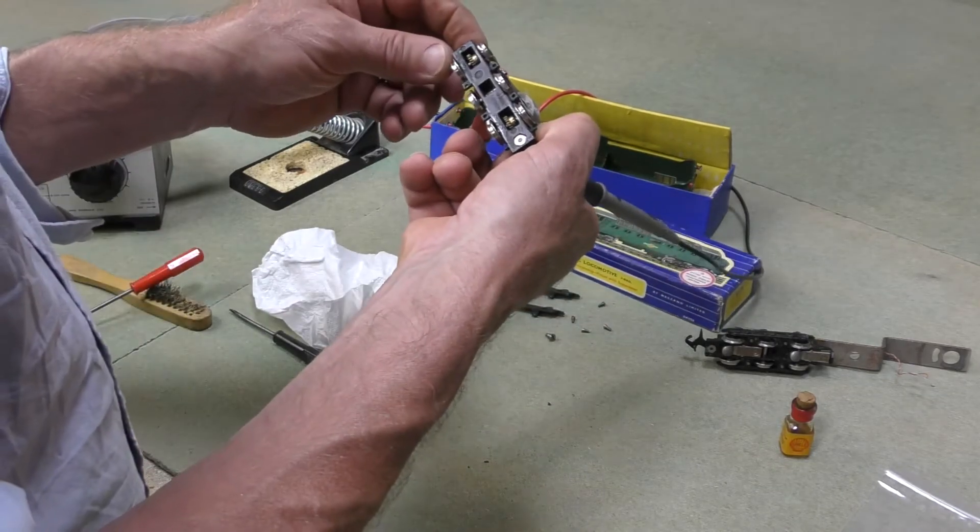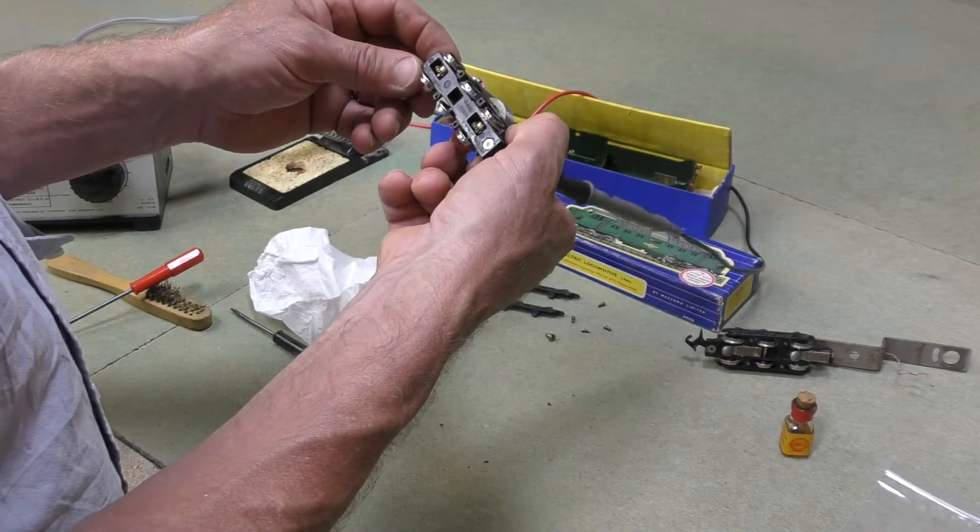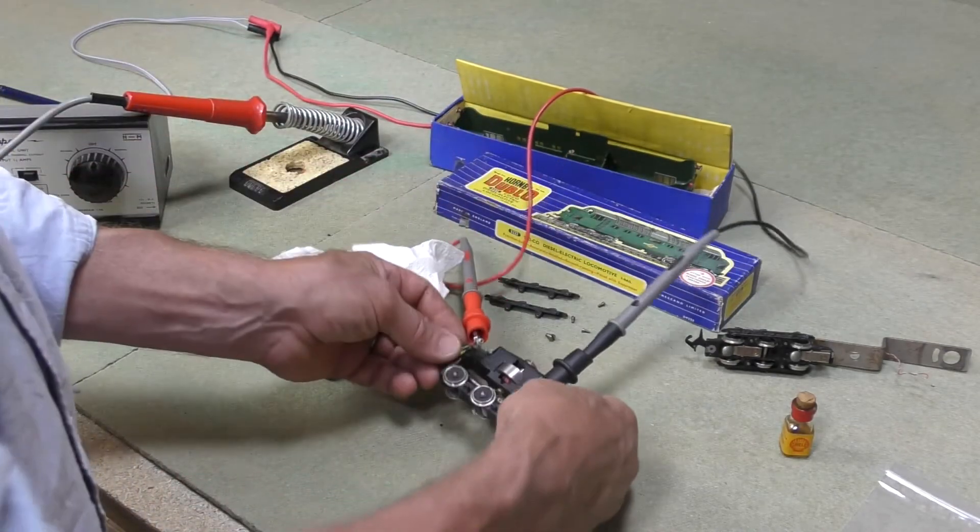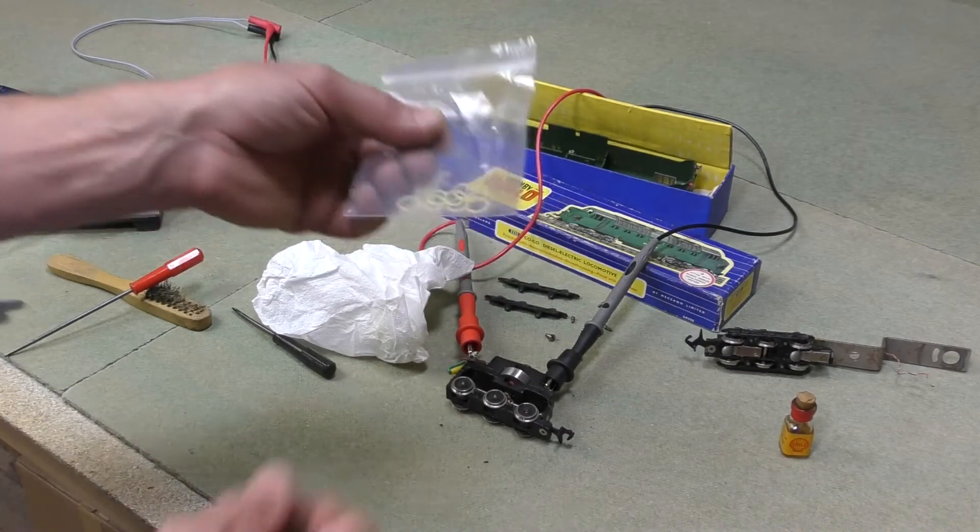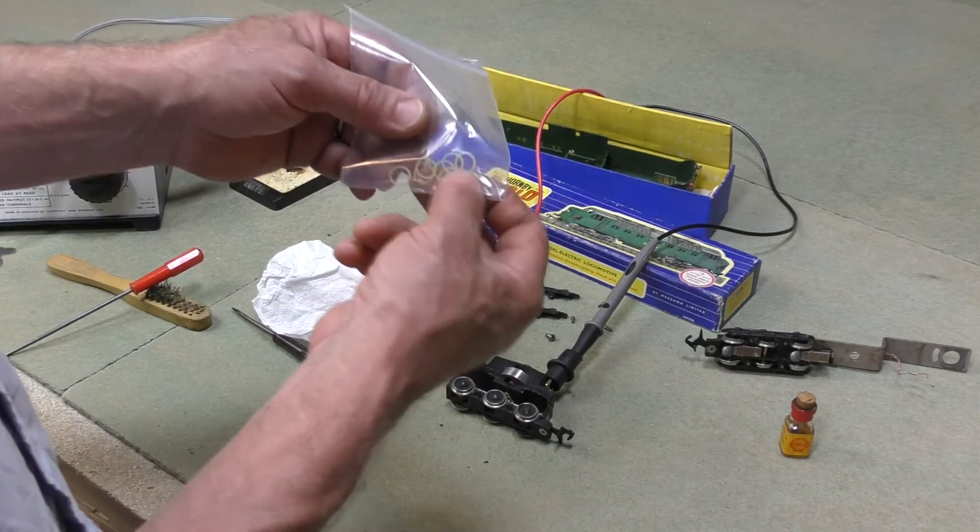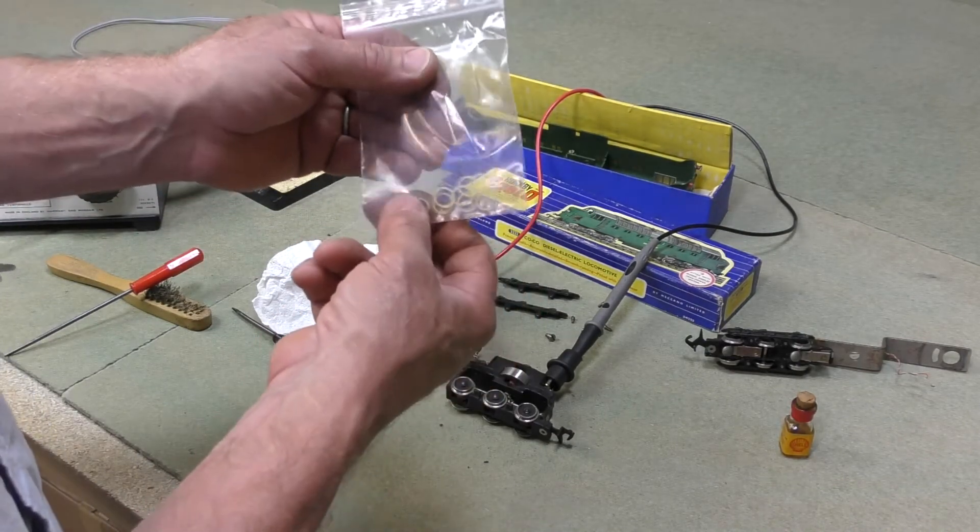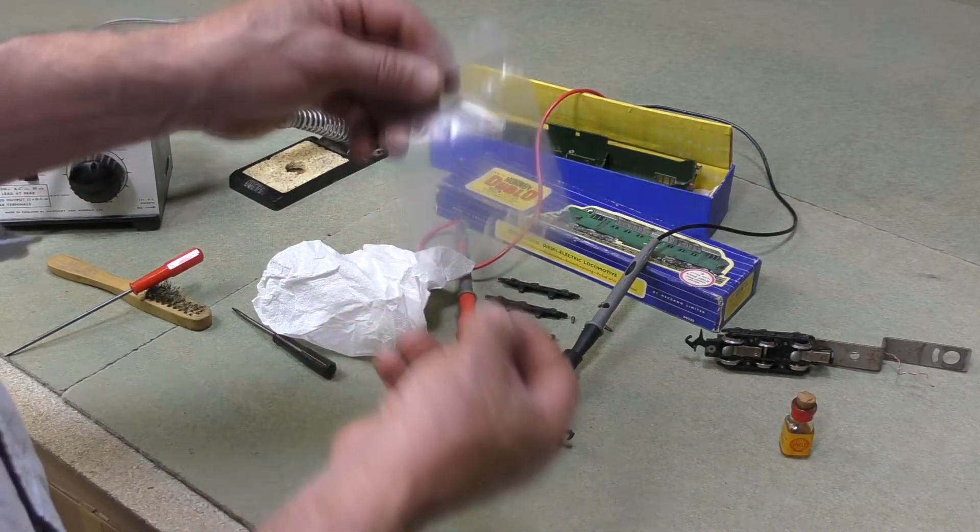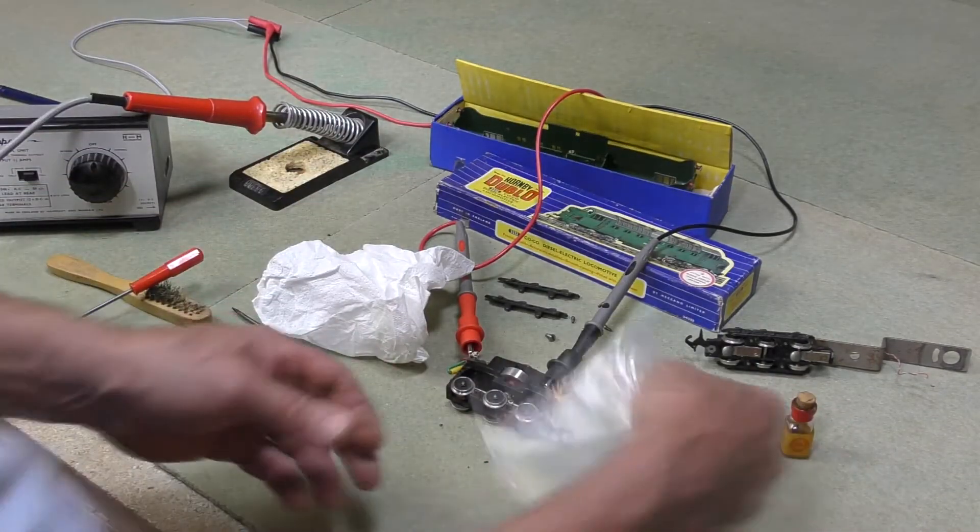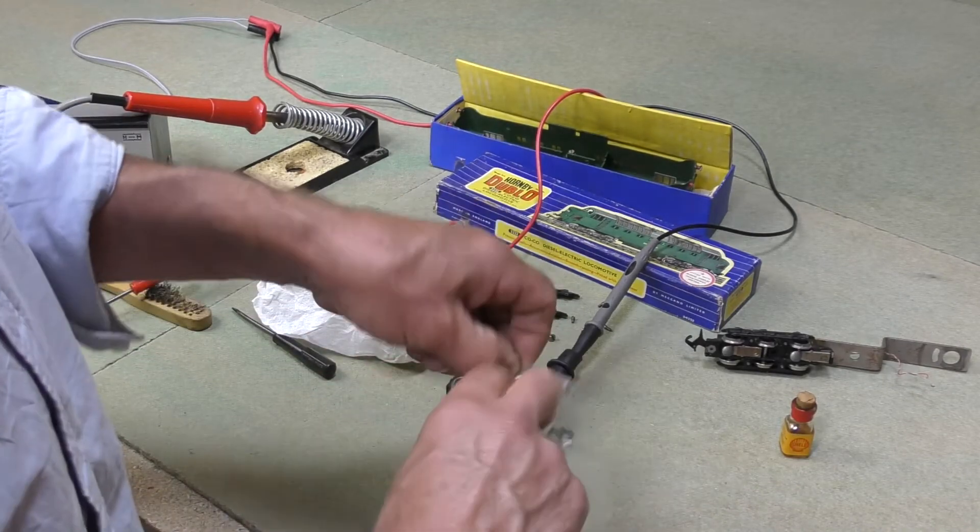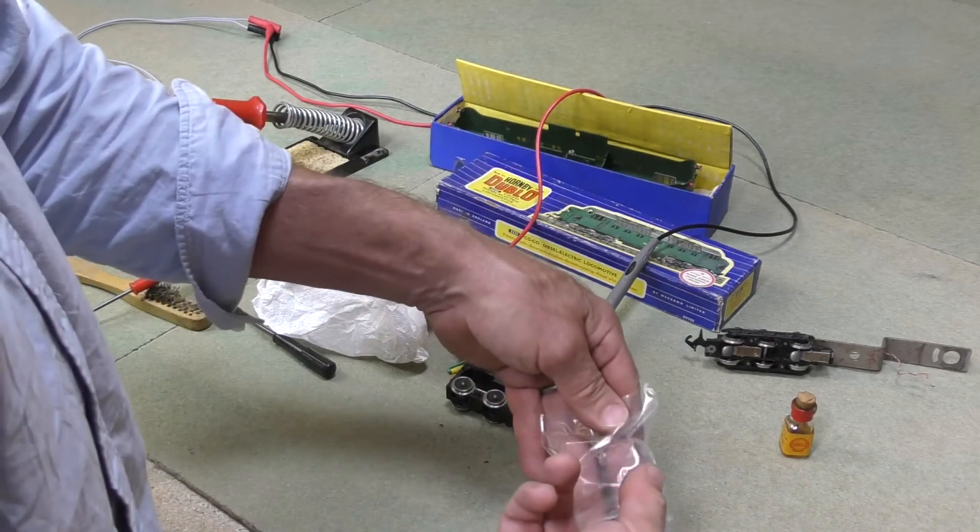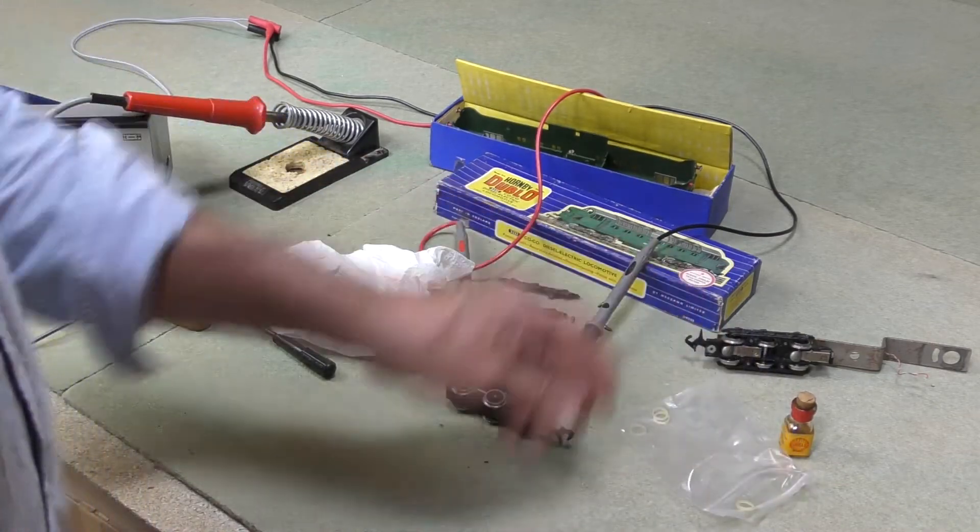Anyway, happy with that. So I think what we'll do now is get the new tires on. Now I've got these from a well-known auction site, haven't used them before. They are sort of clear color, so we're going to give them a try. Let's see what they're like. We only put them on the outside drivers, so there's four required. There's eight in that packet.